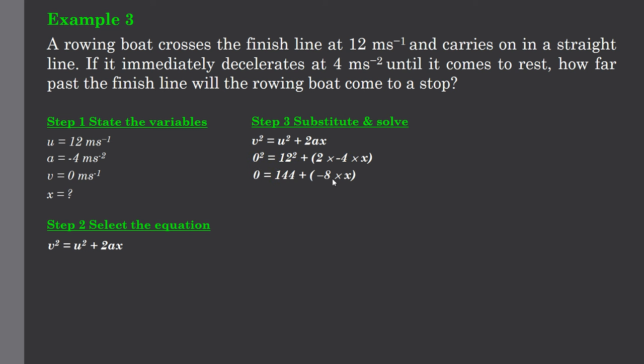We sub in our variables. And we simplify that, we have 0 equals 144 plus, in brackets, negative 8 times x, or written as such. Let's get the 8x by itself. So we'll take 144 from both the left and the right, and that will leave me with negative 144 is equal to negative 8x. Divide both sides by negative 8, and we end up with a distance of 18 meters per second.